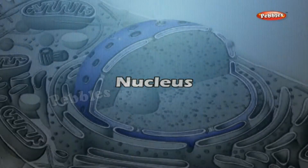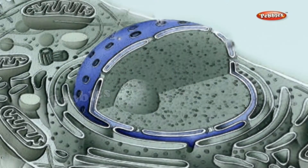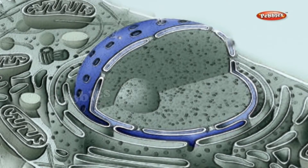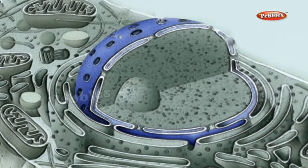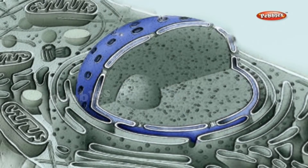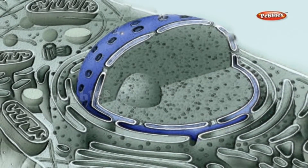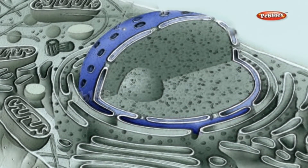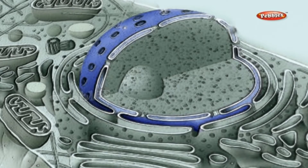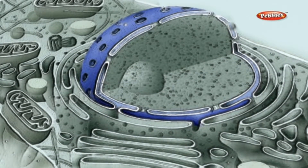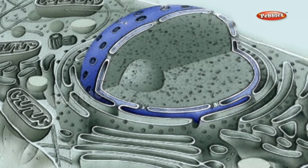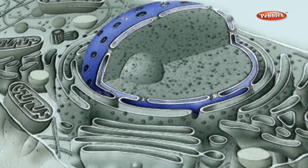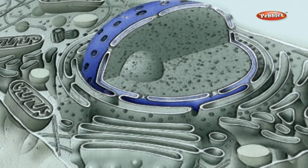Nucleus. The nucleus is the most important part of a cell. It is usually spherical or oval in shape. It controls all the vital functions of the cell. It is made up of the nuclear membrane, nucleoplasm, nucleolus and chromosomes.